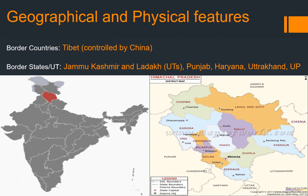Now we will discuss its geographical and physical features. Bordering countries are Tibet, which is presently controlled by China. Bordering states and union territories are Jammu Kashmir, Ladakh, Punjab, Haryana, Uttarakhand, and Uttar Pradesh. In the images below you can see where Himachal Pradesh is precisely located on the map of India.